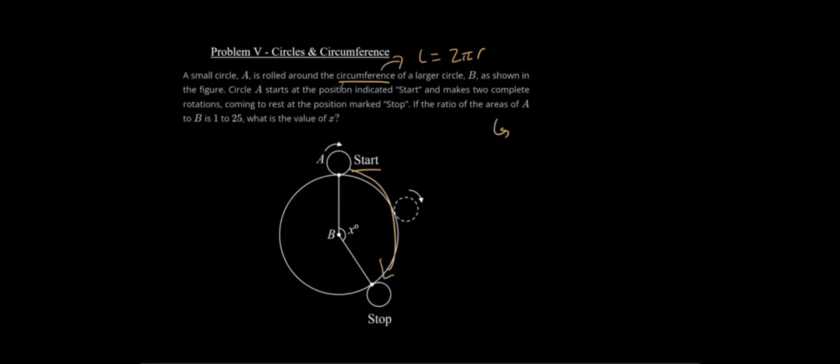If the ratio of the areas of A to B is 1 to 25, what is the value of x in degrees as we see by this degree symbol here? Let's break this down. How can we figure this out? Where do we start? Take a second, see if you can solve this for yourself.